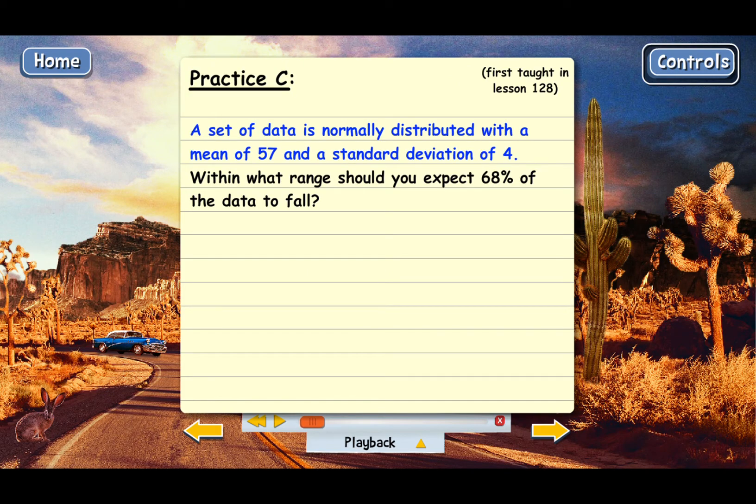A set of data is normally distributed with a mean of 57 and a standard deviation of 4. And the question is, within what range should we expect 68% of the data to fall?